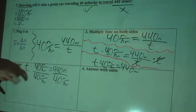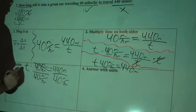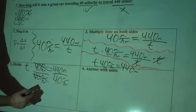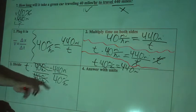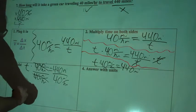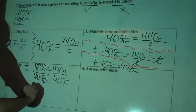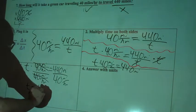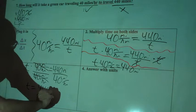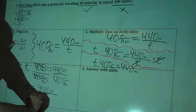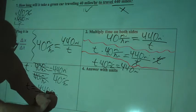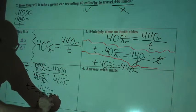So on this side over here, 40 and 40, they cancel out. That was the reason we did that, to get T by itself. And on this side, now we have 440 divided by 40. I'm going to rewrite this down here. So T equals 440 miles divided by 40 miles per hour.